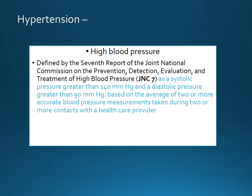The definition of hypertension is a systolic blood pressure greater than 140 millimeters of mercury and a diastolic pressure greater than 90, based on the average of two or more accurate blood pressure measurements taken during two or more contacts with a healthcare provider.